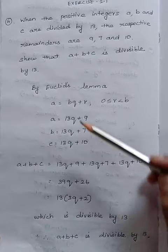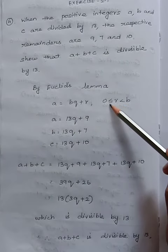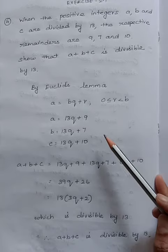By Euclid's lemma, a equals bq plus r, where r is greater than or equal to 0 and less than b.